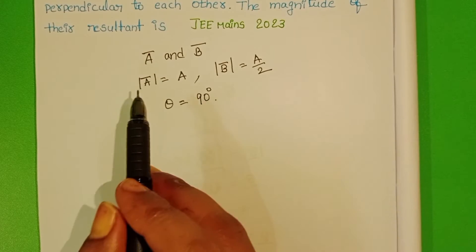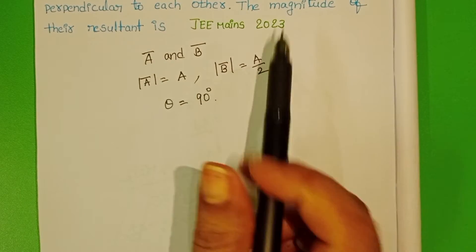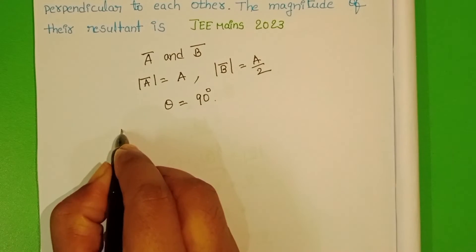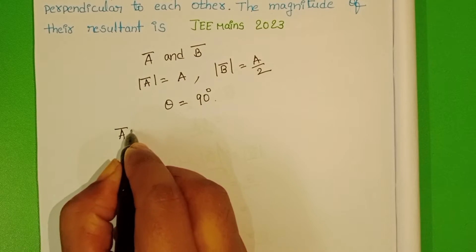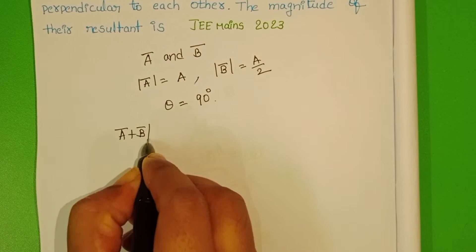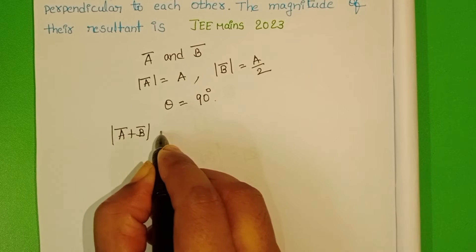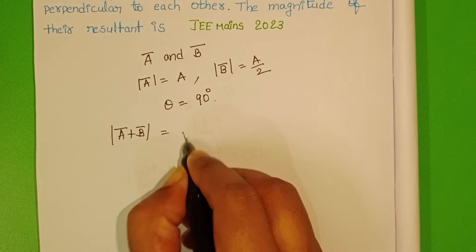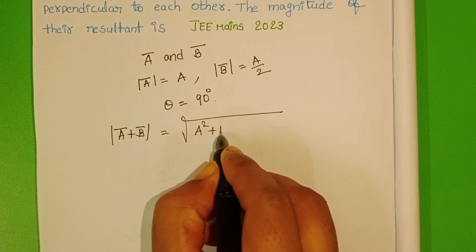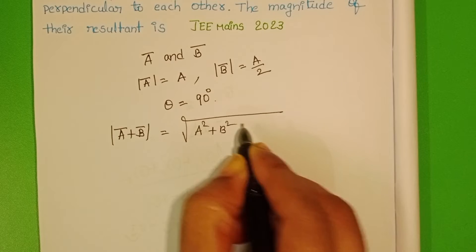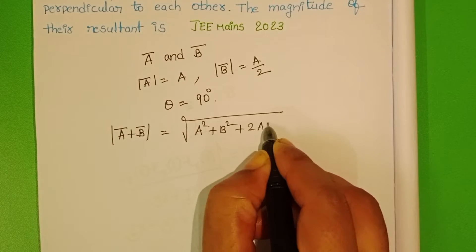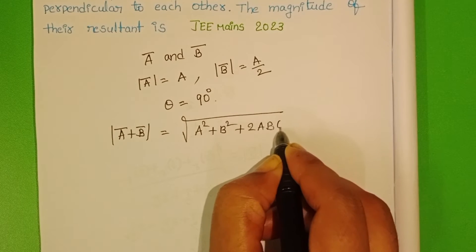We know the formula of magnitude of the resultant: |A bar + B bar| equals the square root of A squared plus B squared plus 2AB cos theta.